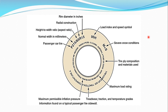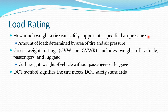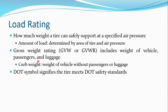The load rating indicates how much weight the tire can safely support at a specific air pressure — how much area of the tire at a specific pressure bears that weight. One important rating is the Gross Vehicle Weight (GVW or GVWR), which includes the complete weight of the vehicle plus passenger and luggage weight. Curb weight is different — it represents only the weight of the vehicle itself, without passengers or luggage.